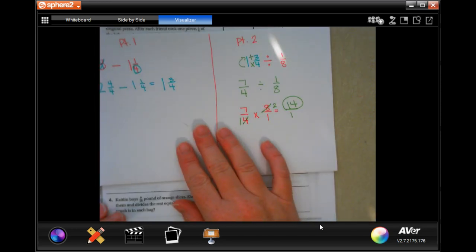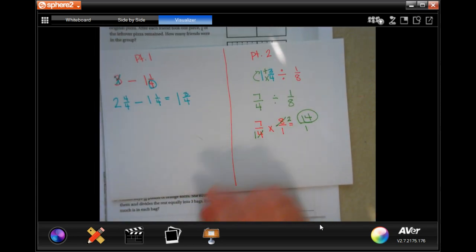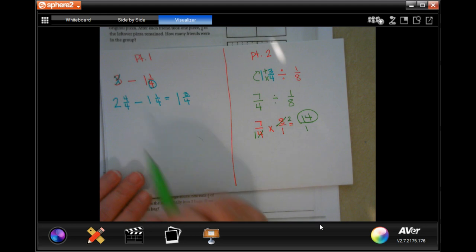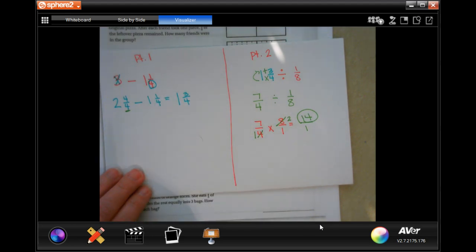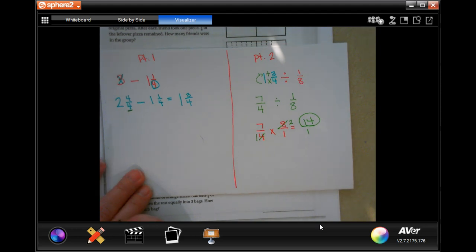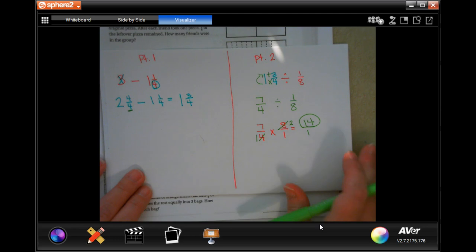So part 1 and part 2, pause it, write down your work, show your work. Know that when we're subtracting and we need to borrow, that we need to do this. I used 4 because my denominator was 4. When you're subtracting fractions, you need to have the same denominator. You need a common denominator.